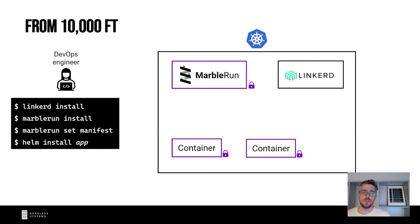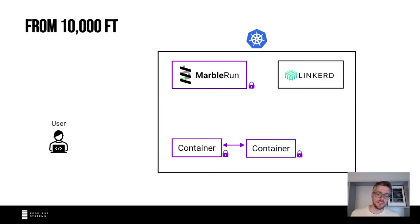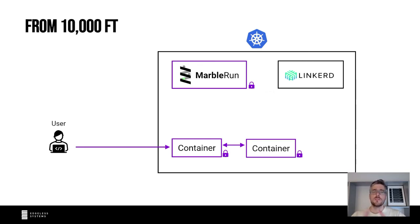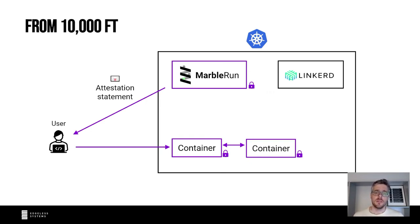Only if the containers comply with the manifest will MarbleRun issue TLS credentials to them and send over the other secrets. The client can then establish a secure connection to your deployment that terminates directly inside a secure enclave, making it truly end-to-end secure. The client can also get an attestation statement from the MarbleRun coordinator, and by examining that statement, convince themselves that the deployment adheres to what is specified in the manifest. This is a very powerful feature.